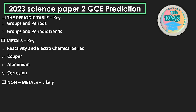Non-metals is not a key topic but is likely to appear. Under non-metals we have hydrogen, oxygen, nitric acid, carbon dioxide, and ammonia. Ammonia and carbon dioxide preparation appeared last year and the year before, but equations for preparation of hydrogen and oxygen have not come for a while, and neither has nitric acid. There is a high probability that hydrogen, oxygen, and nitric acid will be featured if a non-metals question appears.